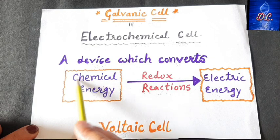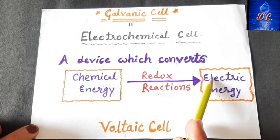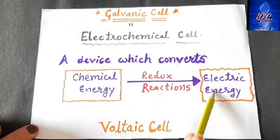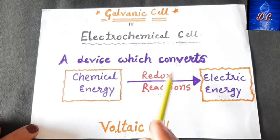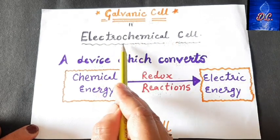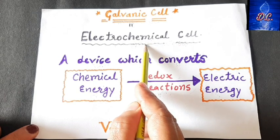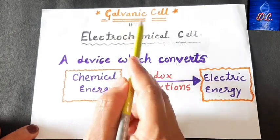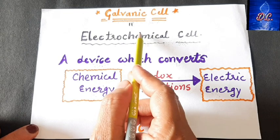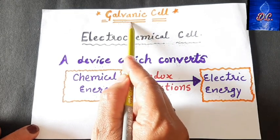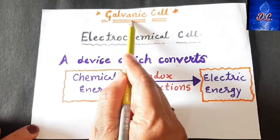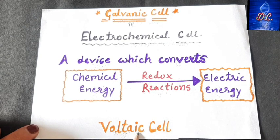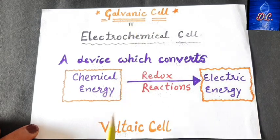Devices which convert chemical energy into electric energy through redox reactions are called electrochemical cells. Today's video is about the galvanic cell, also known as the voltaic cell — named after their respective inventors.